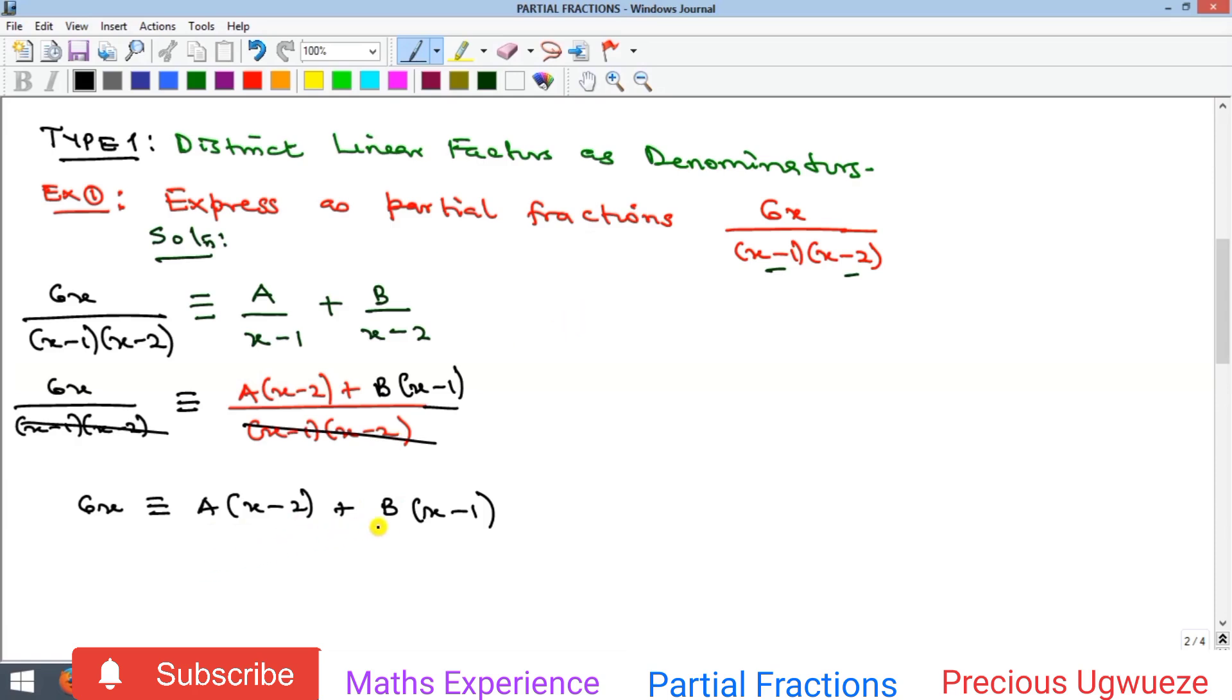I will make x equal to 1. Let x be 1. If that happens, x as 1 here will give me 6 equals A times (1 minus 2). If I put 1 here...